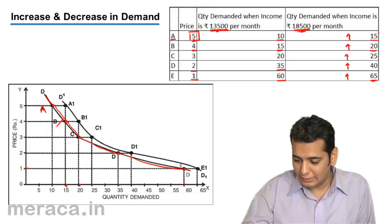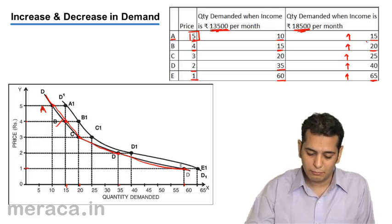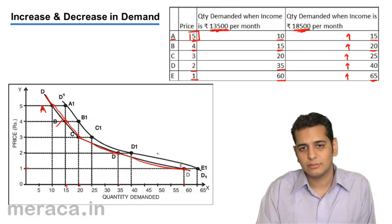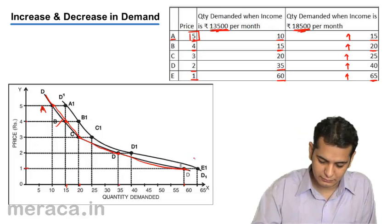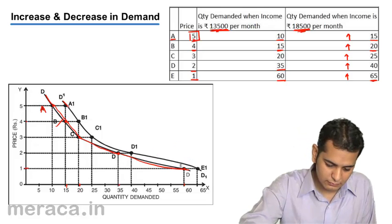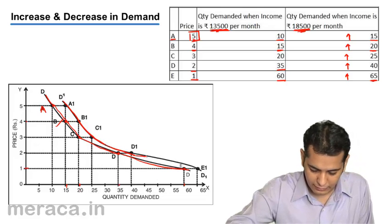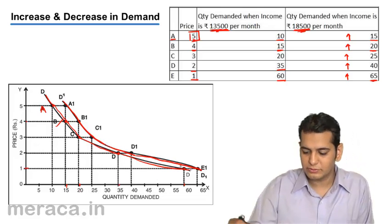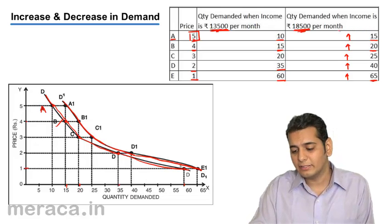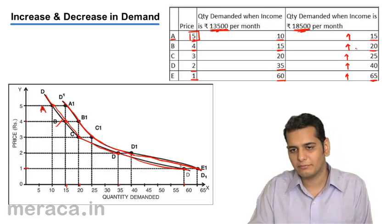Likewise, let's take these coordinates and plot them on the graph. This is the demand curve that we get if we plot the coordinates at the income level of Rs. 18,500.